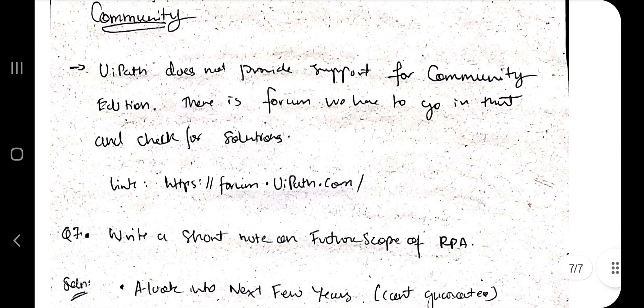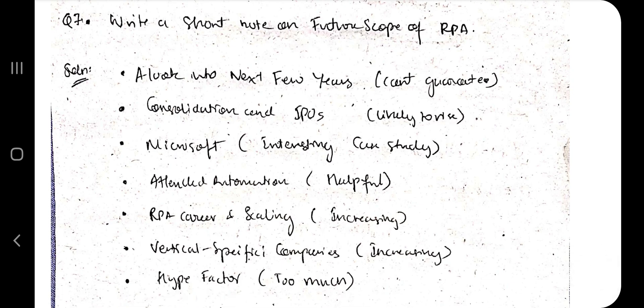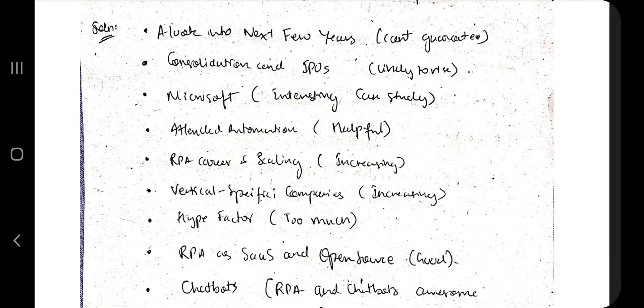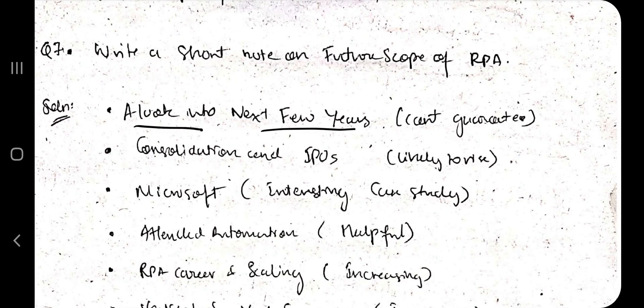Finally, we have the last question which is write a short note on the future scope of RPA. These are some of the key points you have to remember. If they ask this question, you have to remember these key points and write two to three lines for each of these. When the internet was released, at that time no one thought that computer will become this massive and this useful. One of the persons also made a statement that computer, why will it be used in homes? Someone made fun of iPhone saying iPhone will not be getting a market share. But it's not that easy to say what will most likely happen in the future because it's dependent upon a large number of factors.